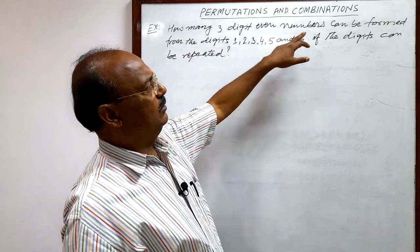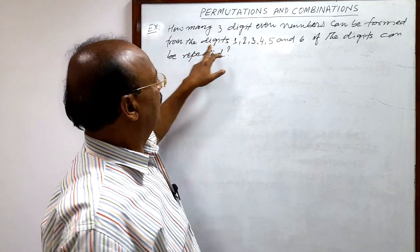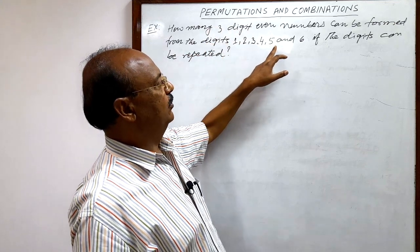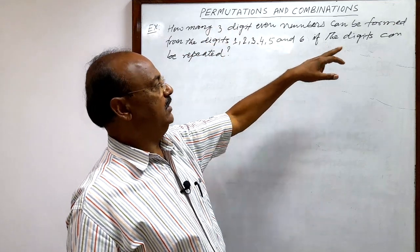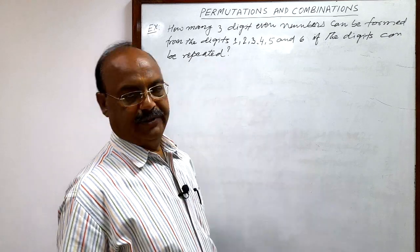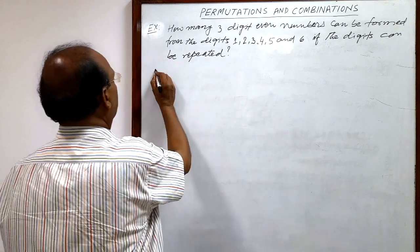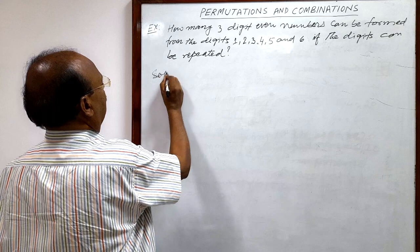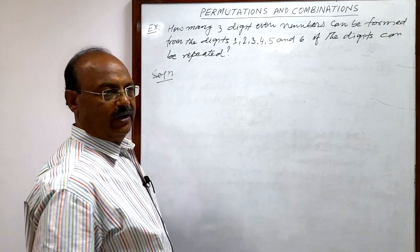How many three digit even numbers can be formed from the digits 1, 2, 3, 4, 5 and 6 if the digits can be repeated? So you see we have to form three digit even numbers.